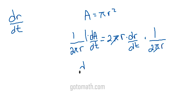And you're left with, now I'm going to rewrite it. This is the standard way of writing things here. dr/dt equals 1 over 2 pi r dA/dt. So there you go.